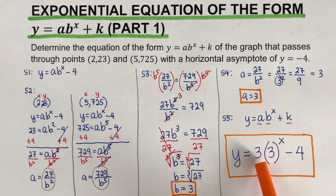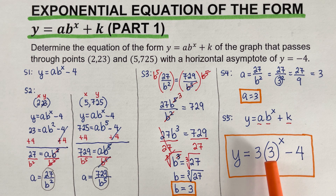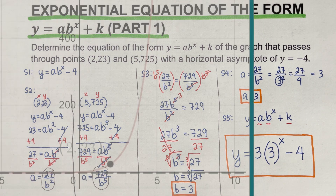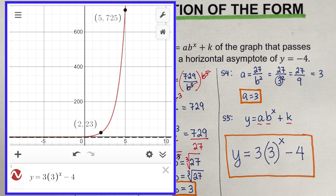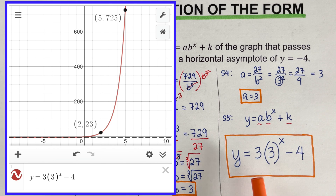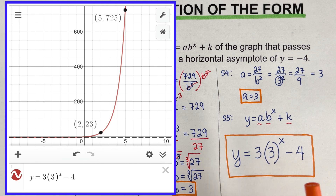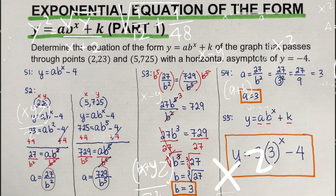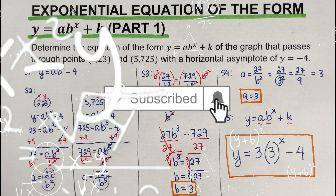Note that both a and b happen to equal 3 here, but they don't have to match. On the side you can see the graph: the horizontal asymptote (shown as a dashed line) is y equals negative 4, and the graph of y equals 3·3^x minus 4 passes through the points (2, 23) and (5, 725). If you find this video helpful, hit like and subscribe for more math videos.